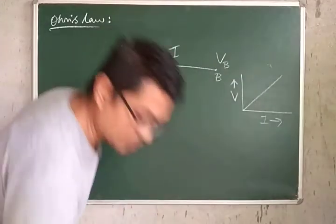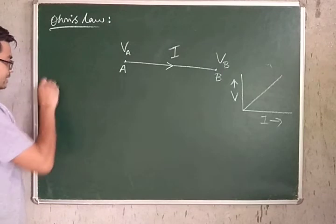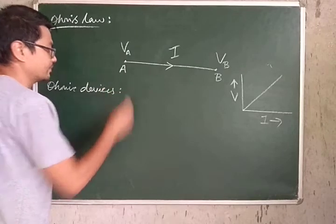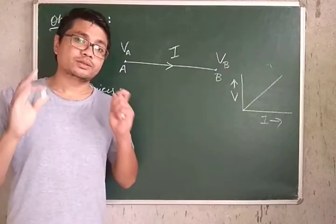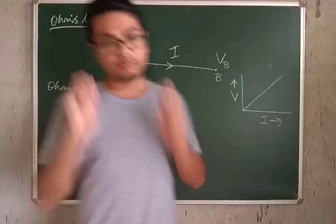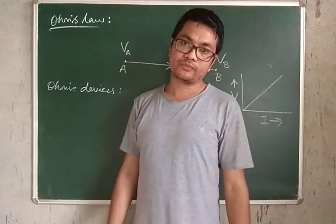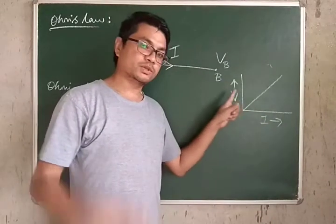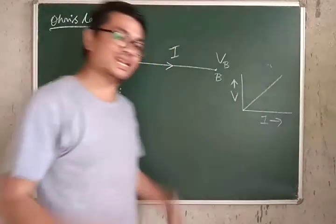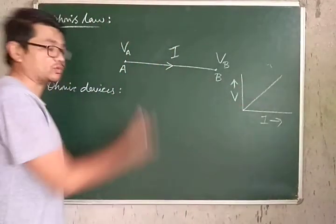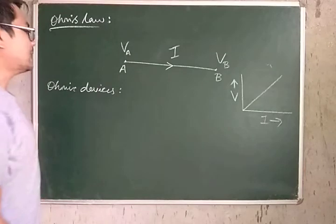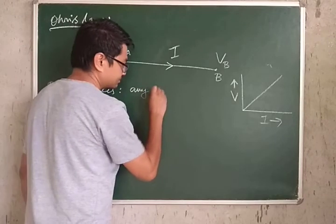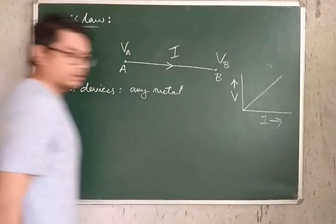Let's talk about Ohmic devices and non-Ohmic devices. Ohmic devices are electrical components which obey Ohm's law — that is, their graph of potential difference versus current is a straight line. Examples include any conductor or any metal.